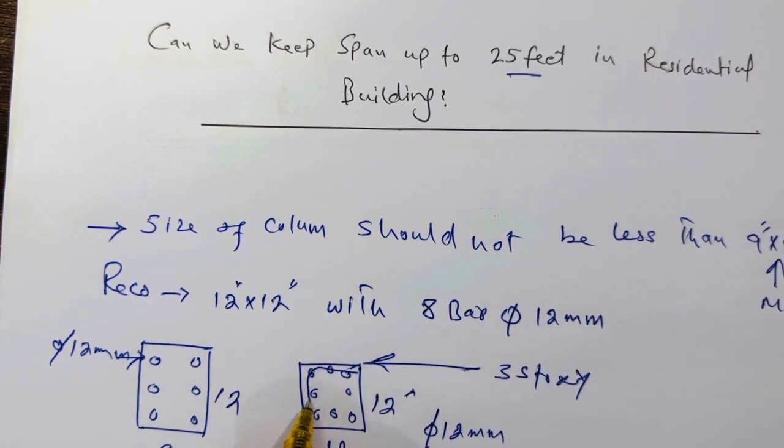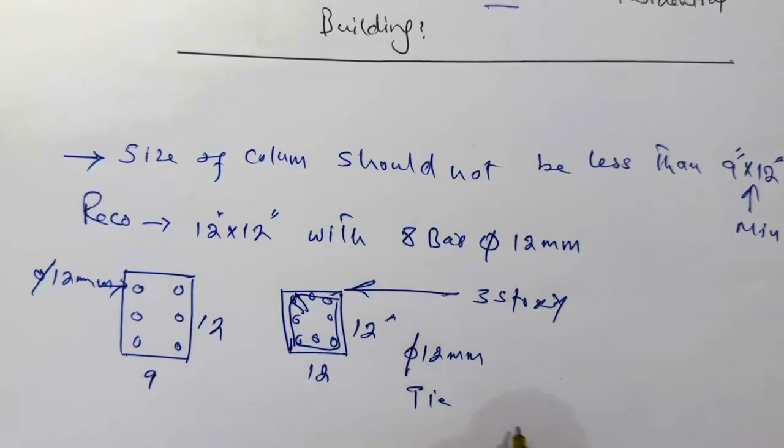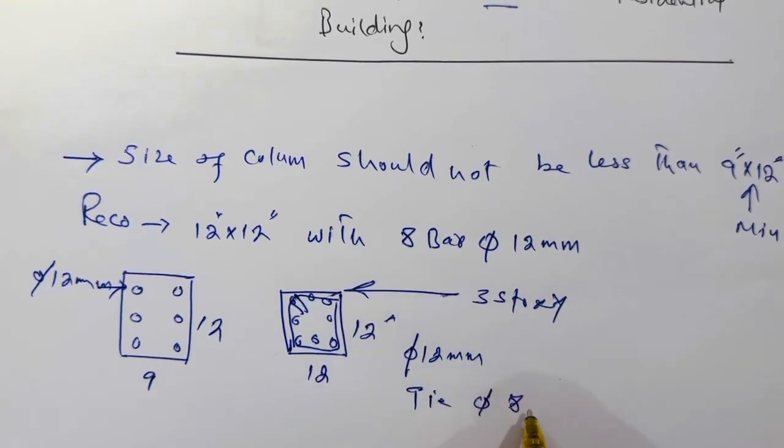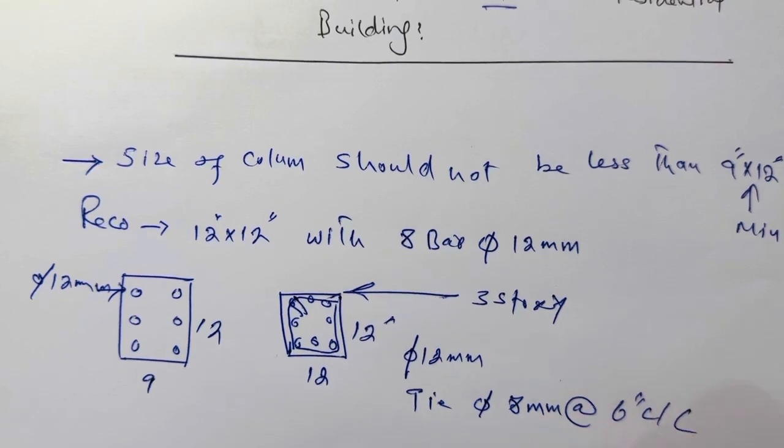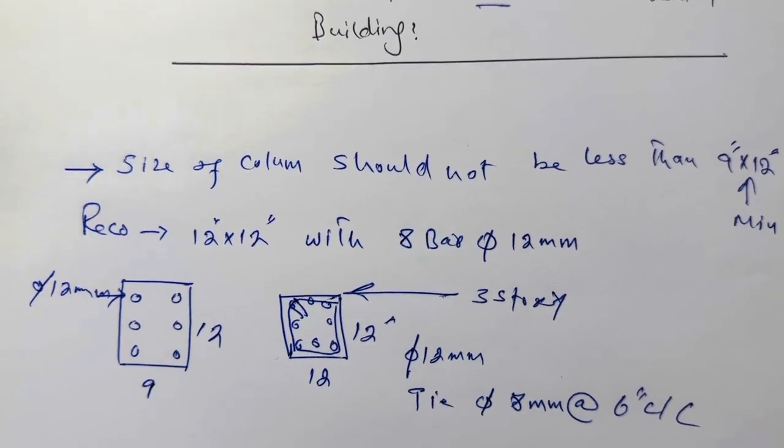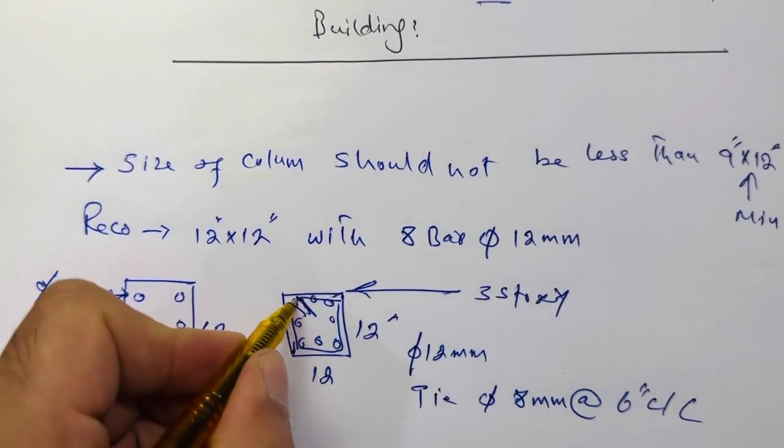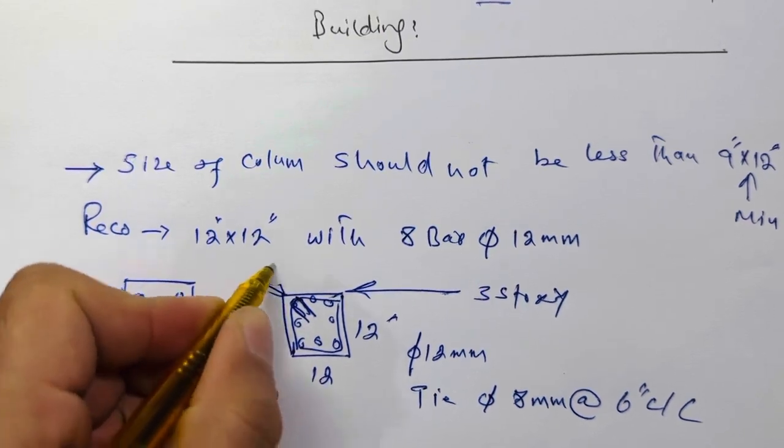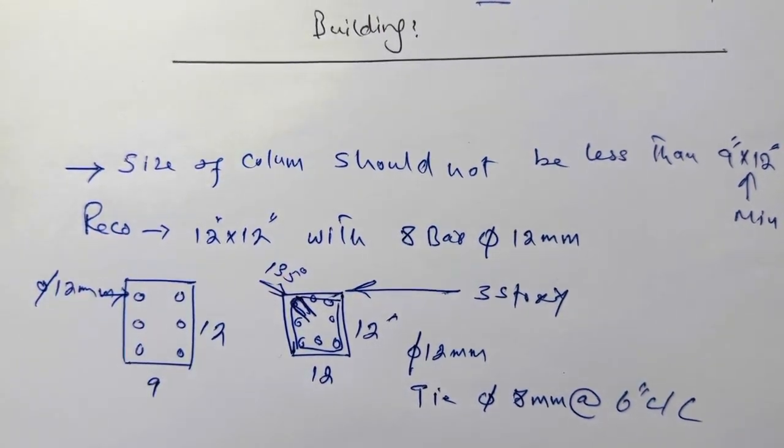And here you can see this is the tie. So the tie diameter should be 8 millimeter with the spacing of 6 inches center to center. These hooks should be bent on 135 degree angle.